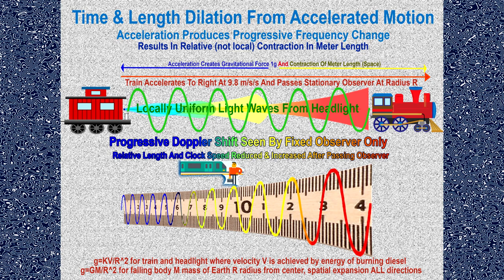Let's study the illustration for an accelerating train — not uniform motion, but accelerating. As the train accelerates towards the platform, the Doppler shift observed is not constant but progressively compressed and bluer from point to point. Even though the headlight does not change frequency relative to its local source — the train engine — stationary frame B clearly witnesses a progressive blue shift. There is indeed a fractional change in frequency exhibited by the changing motion of A, which means a corresponding progressive change in meter length and clock speed relative to B.